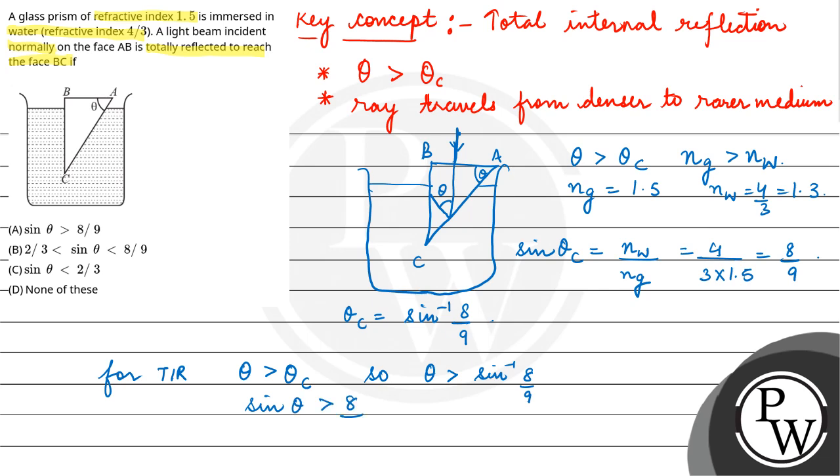So our final answer is option A: sin theta greater than 8/9. I hope you understood it well. Best of luck.